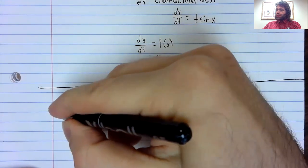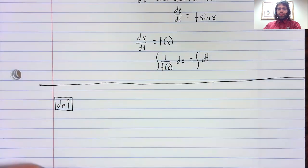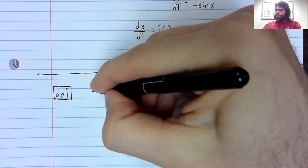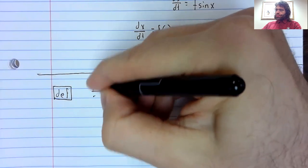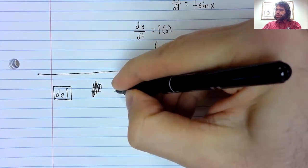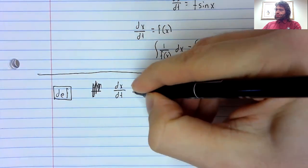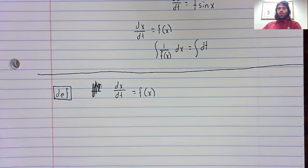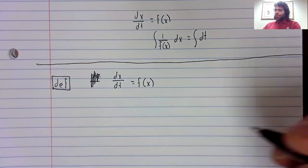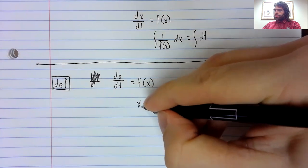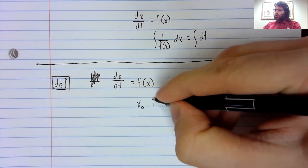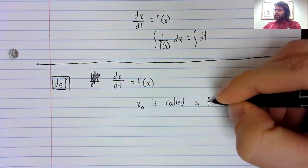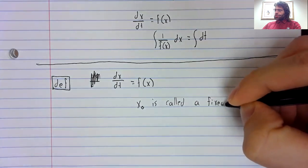And to do that, we're going to need the following definition. Suppose we have an autonomous differential equation. Then a value x₀ is called a fixed point.